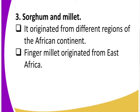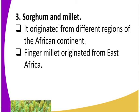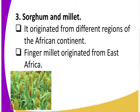Another crop that was domesticated is sorghum. Sorghum originated from different regions of the African continent. You can see what sorghum looks like — that is sorghum. In Kenya, sorghum is mostly grown in the southern Nyanza region.